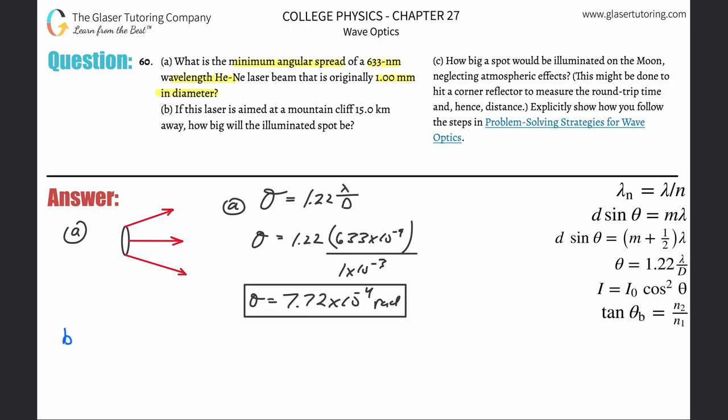Letter B. If this laser is aimed at a mountain cliff 15 kilometers away, how big would the illuminated spot be? So basically pretend you have like a cliff.